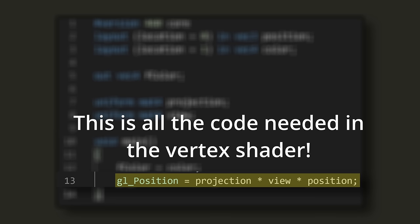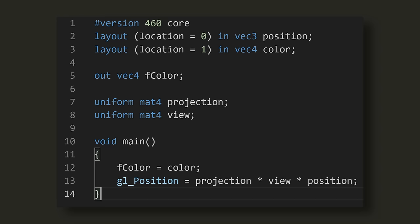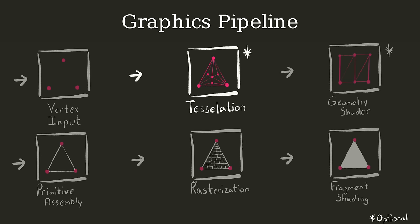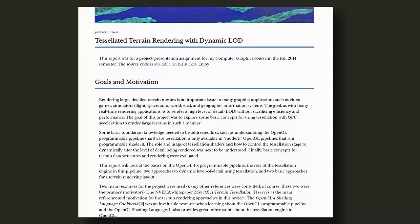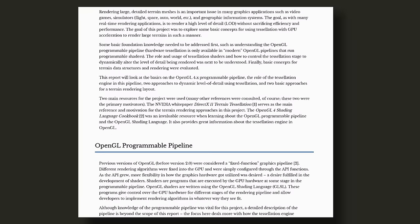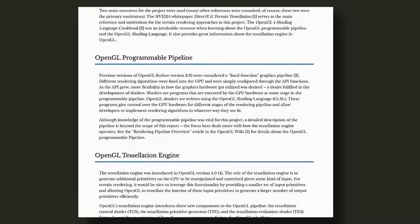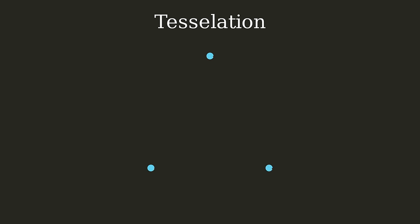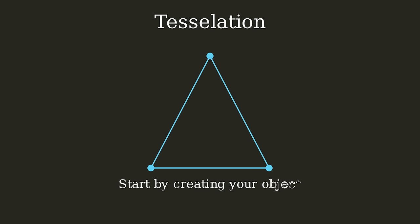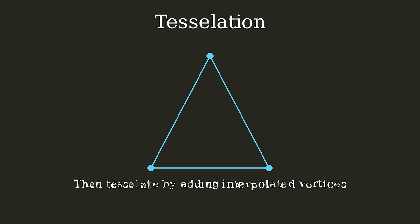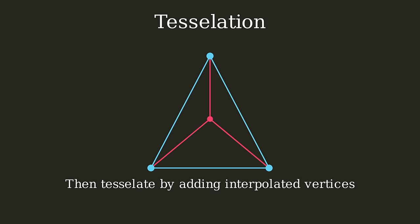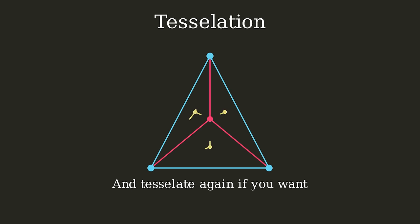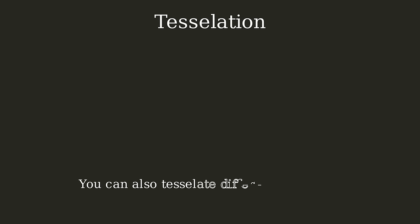Once the vertex shader transforms our data into normalized device coordinates, we move on to the next optional stage: tessellation. The basic premise is that if you send in vertex data and process it with your vertex shader, you can then break that data up into even more vertices using a tessellation shader. The catch is these extra vertices will always be interpolated within the current primitive — so if the primitive is a triangle, tessellation will only add vertices within that triangle, and if the primitive is a line, it will only add tessellation within the line.